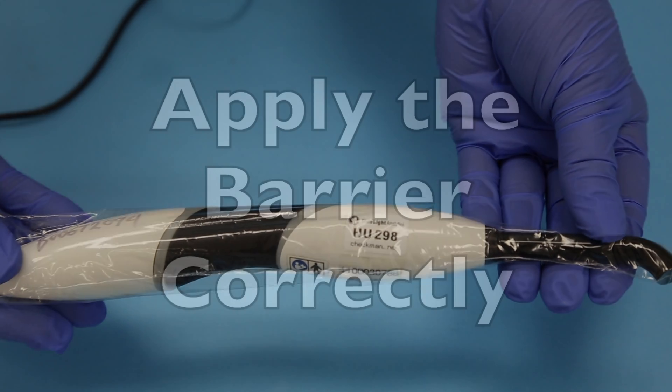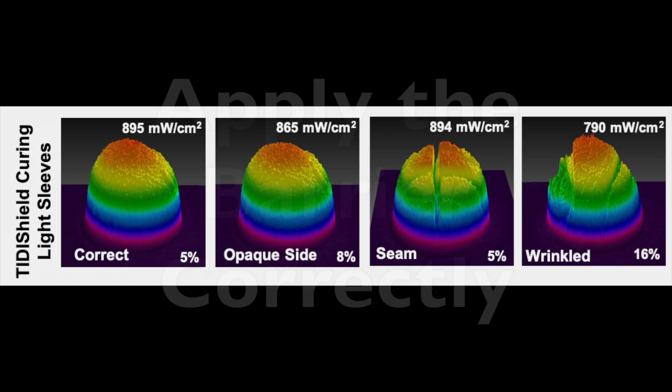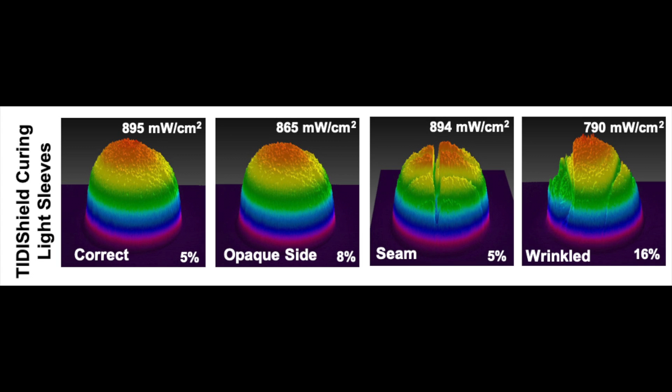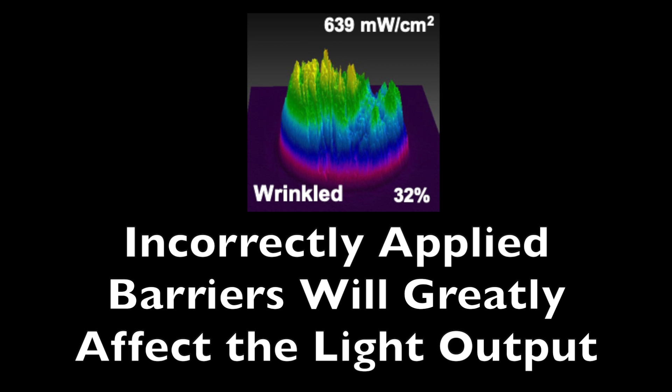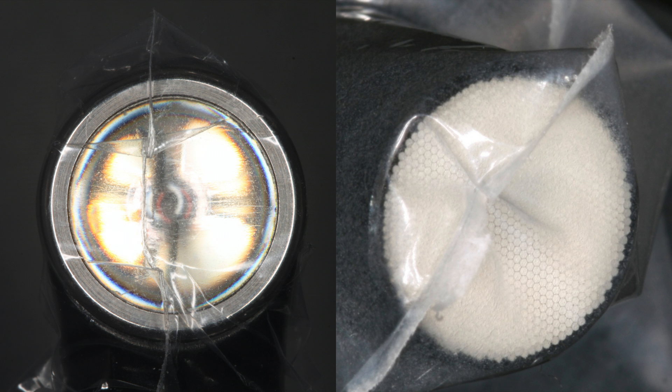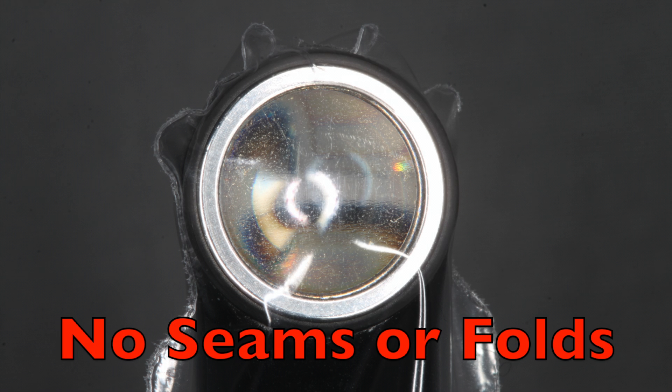Now this barrier sleeve must be applied correctly. It makes sense that if you have wrinkles or folds over the end of the light tip, this can reduce the light output. In fact, a recent study of ours shows that it can reduce the output by 30% or more. So don't have the seam over the tip, such as you see in this picture here, or any folds. Make sure it's nice and taut over the end.